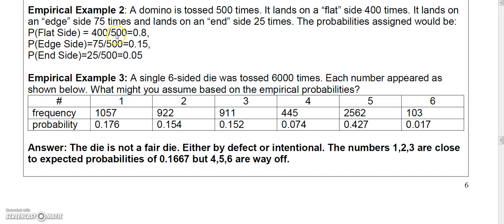400 out of 500 would give us a probability of 0.8 for the flat side. For the edge side, 75 out of 500 gives us a probability of 0.15. And then for the end side, 25 out of 500 would give us 0.05. And again, notice that these add up to 1.